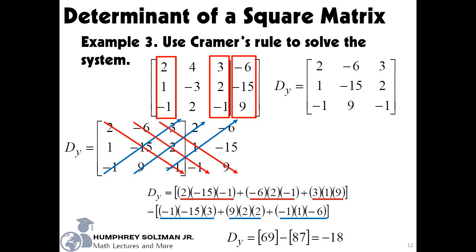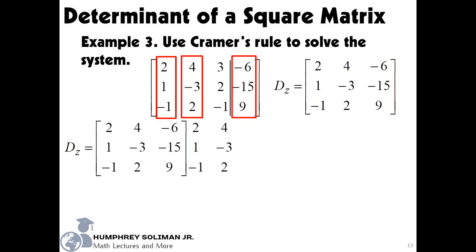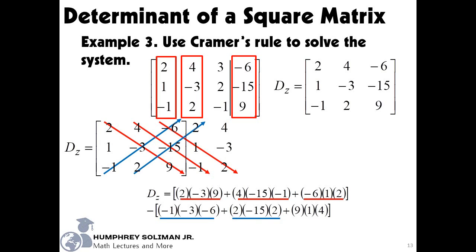Next, we need the determinant of the system's coefficients for the variables, but we have to replace the column for the coefficients of z by the column of the constants of the equations. This will be our value of dz. We already copied the first two columns and placed these beside it. Then we will get the sum of the quantity: 2 times negative 3 times 9, plus 4 times negative 15 times negative 1, plus negative 6 times 1 times 2. Minus the sum of the quantity: negative 1 times negative 3 times negative 6, plus 2 times negative 15 times 2, plus 9 times 1 times 4. Finally, dz equals 36.